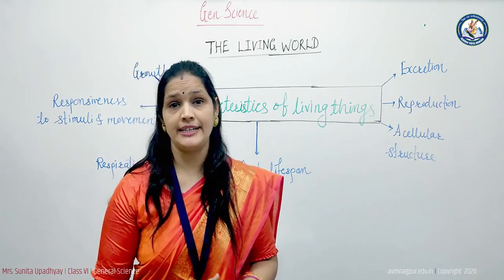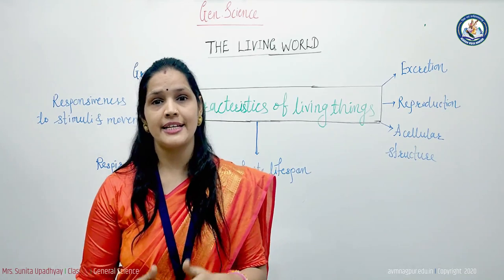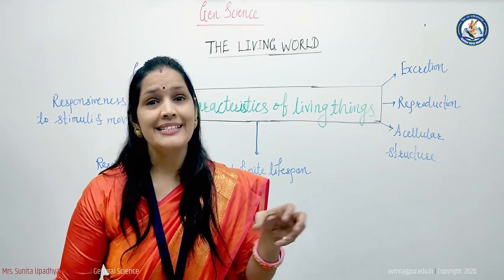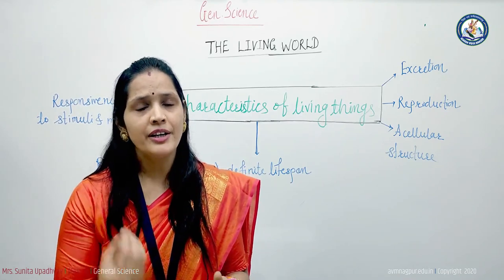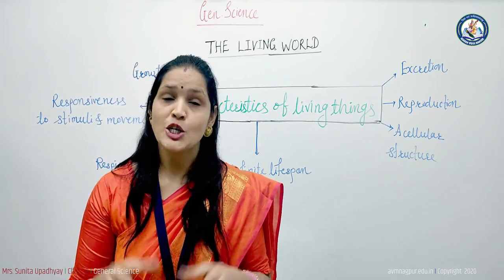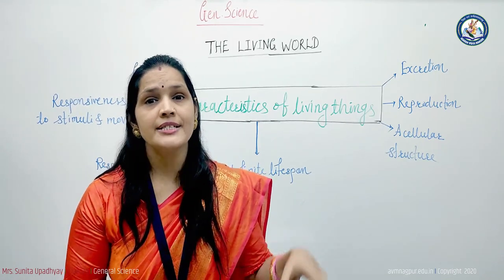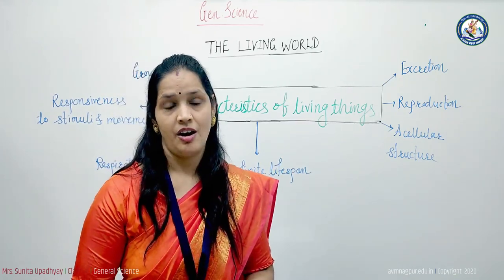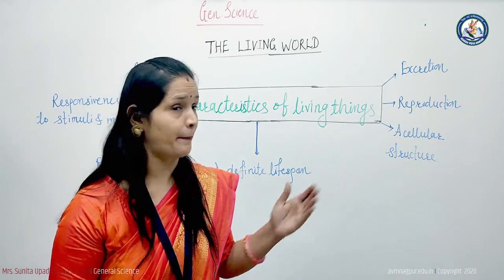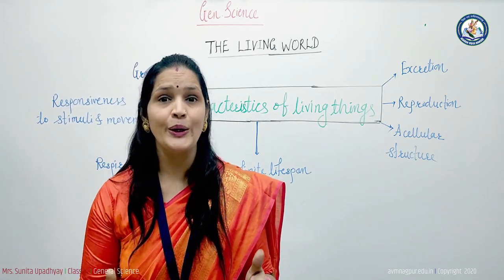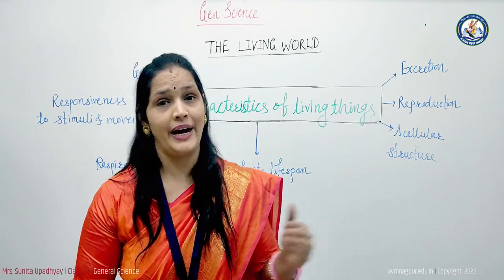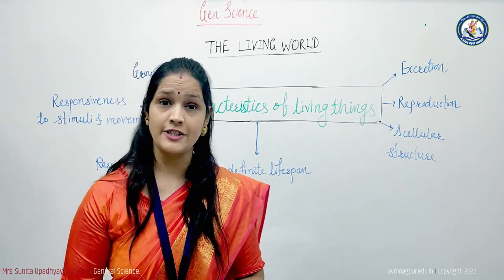The next characteristic of living things is excretion. All living things take food, but not all the food that is eaten is actually used — only one part of the food is utilized by the body. The rest has to be removed, so the process of passing out waste substances from the body is called excretion. Plants also excrete in the form of vapor, and stems of some plants like neem, babool, and drumstick secrete gum as waste substances.